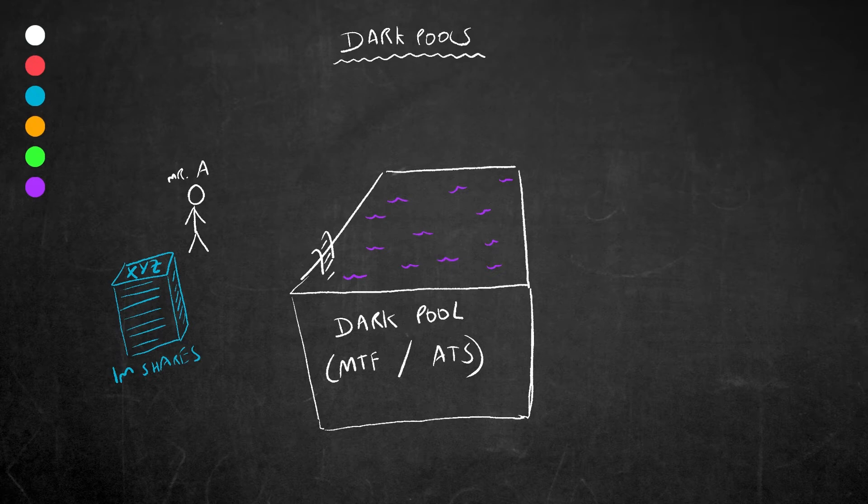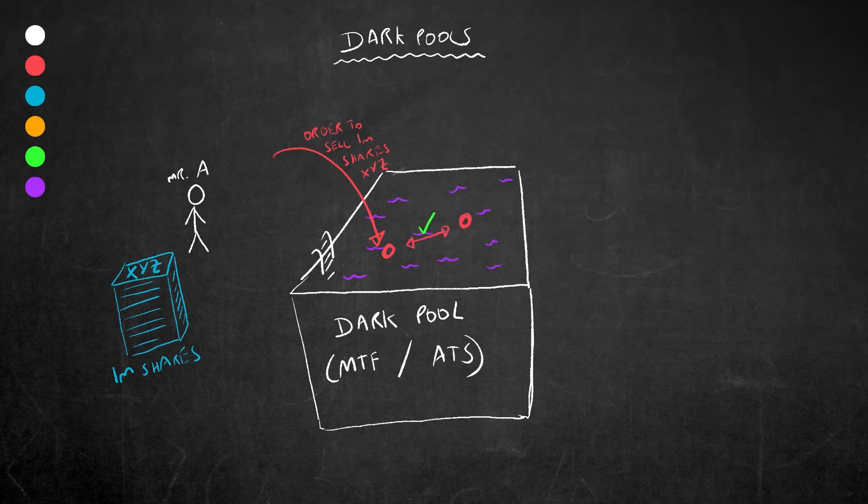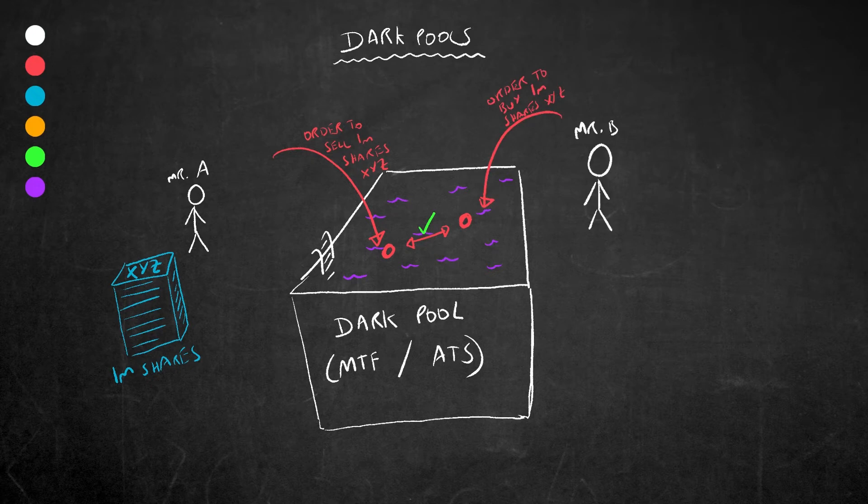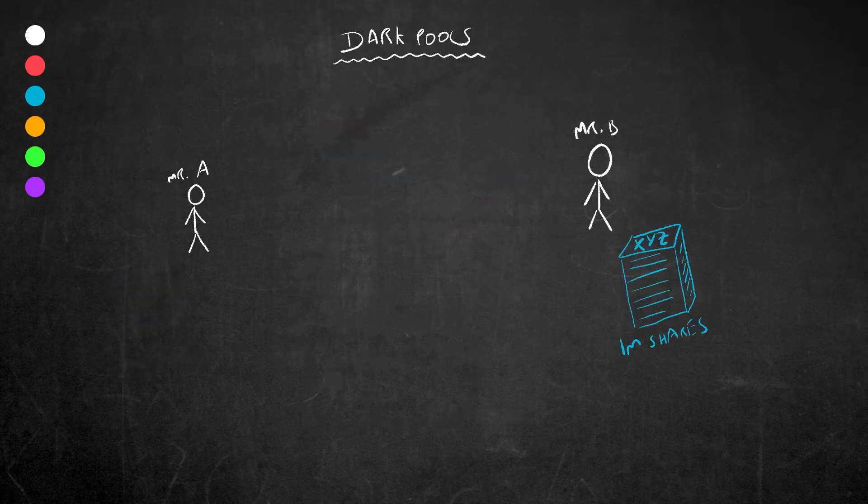In this dark pool, orders are matched up electronically and anonymously. So Mr. A enters this dark pool and puts the order to sell for a million shares of XYZ. This order is soon matched with an order to buy a million shares of XYZ by say a Mr. B. Now these two parties at this point still don't know who the other one is.